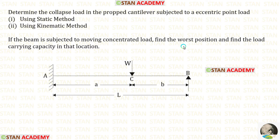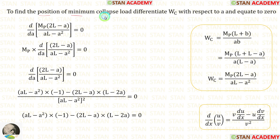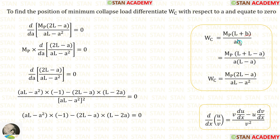In the question we have been asked to find the worst position when the beam is subjected to a moving concentrated load. This position occurs when there is minimum collapse load. To find the position of minimum collapse load, we differentiate Wc with respect to a and equate to zero. Before differentiating, let us make b in terms of a. We know that b is l minus a, so substituting, l plus l gives 2l. Then we multiply these two terms.